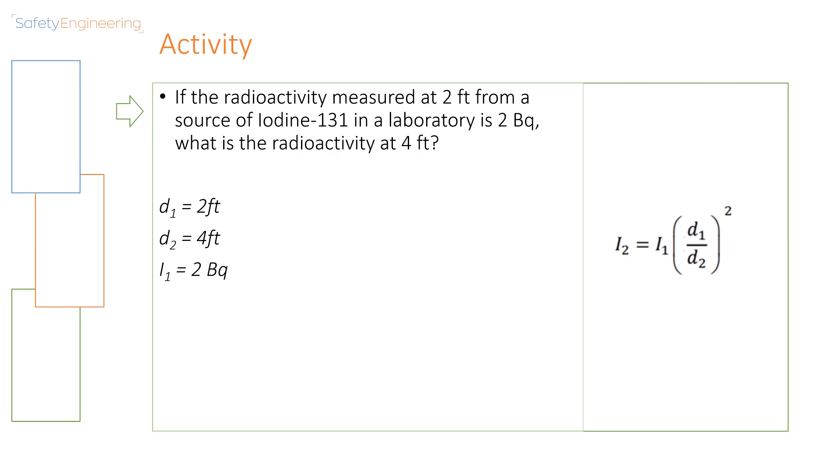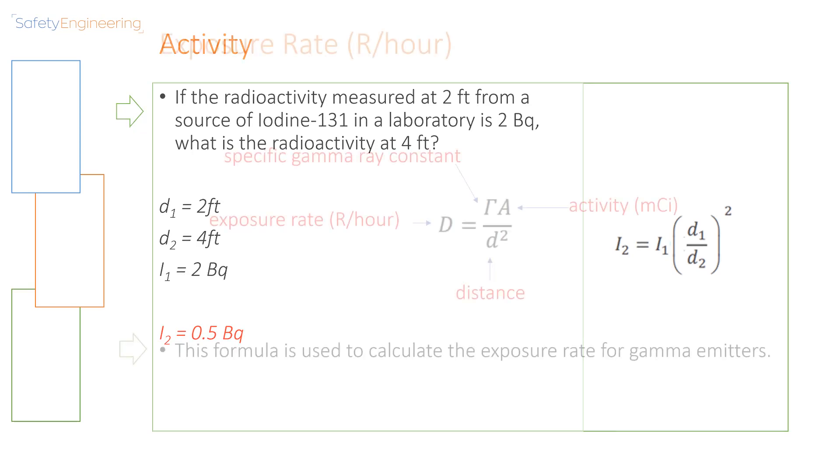So if the radioactivity measured at a distance of 2 feet from a source of iodine-131 in a laboratory is 2 Becquerel, what is the radioactivity at 4 feet? All we need to do is simply put the values in the right place. So D1 in this case is 2 feet, D2 is 4 feet, and I1 is 2 Becquerel. When we put in these values, we are going to get an answer of 0.5 Becquerel.